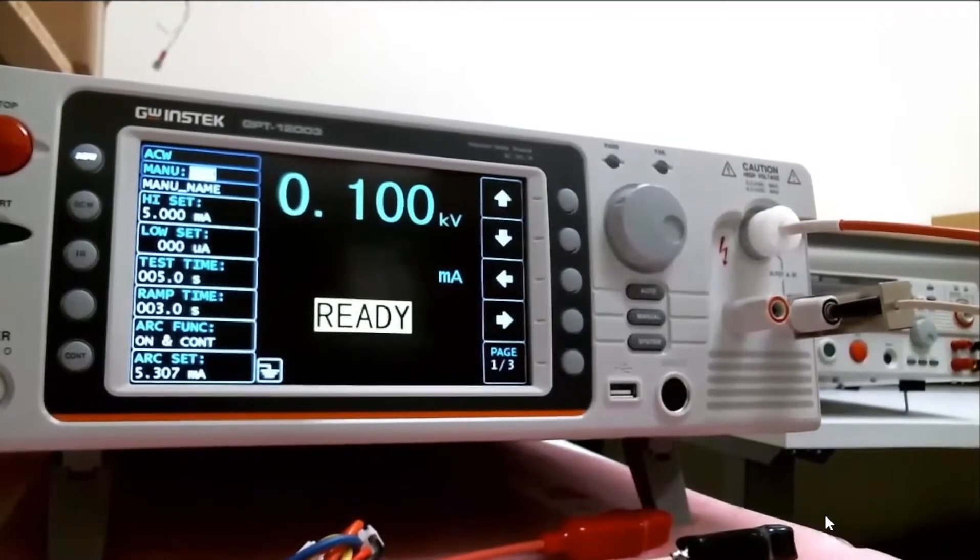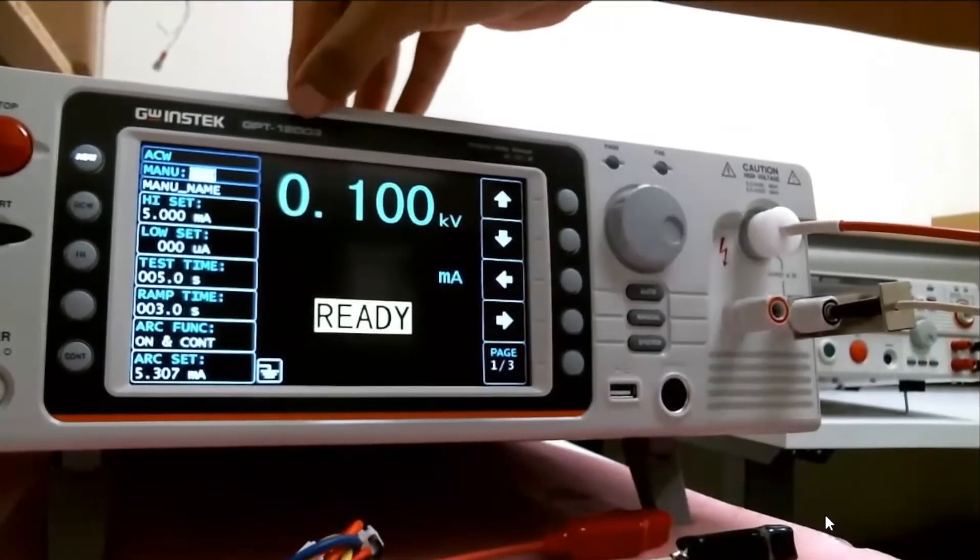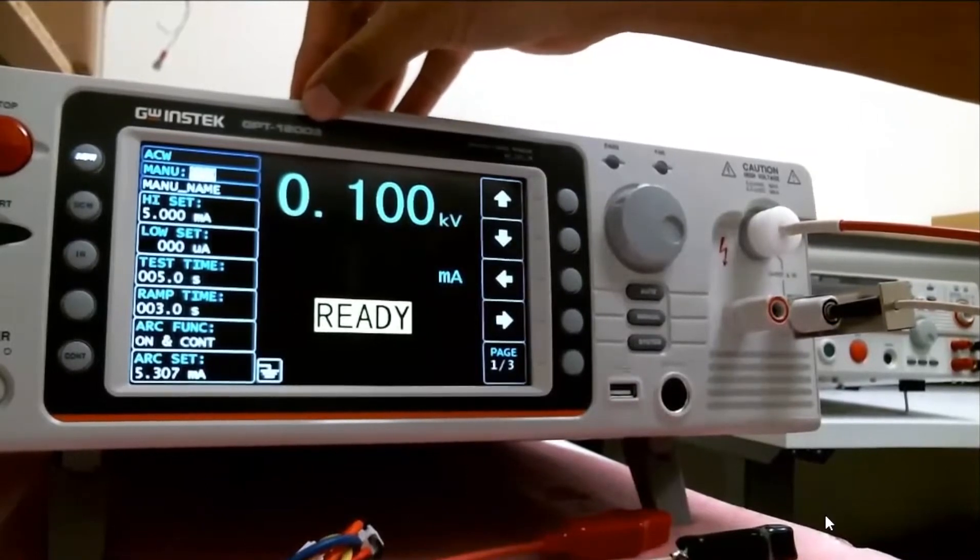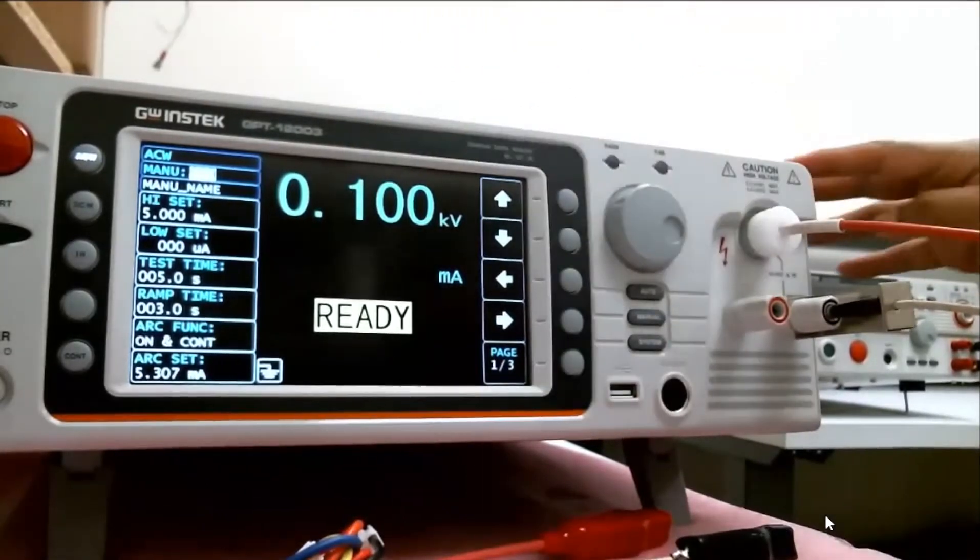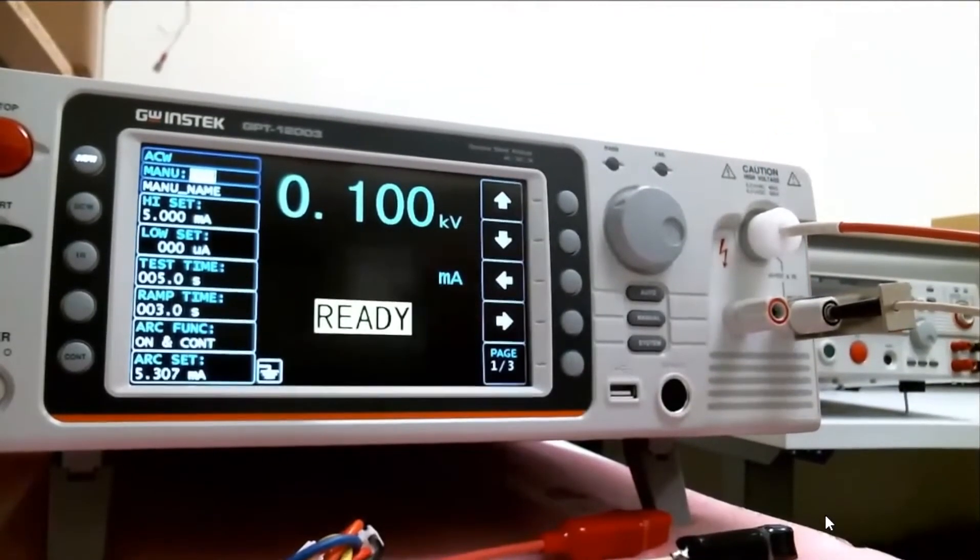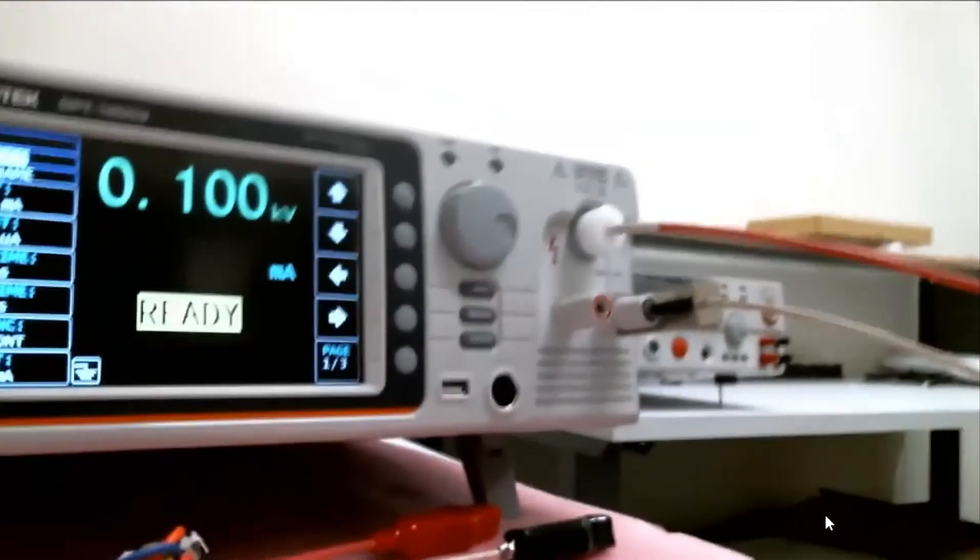So what we have here is a 3-in-1 AC, DC, and insulation resistance testing instrument. This does not have a capacity for ground bond, but in the background you do see another one of our models that does have capacity for the ground bond.